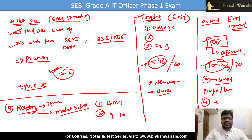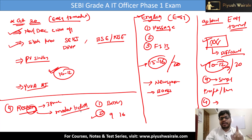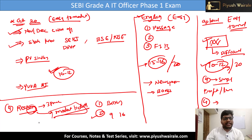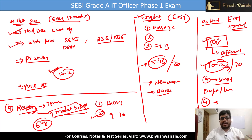That second puzzle was on the difficult side. But if you have been practicing reasoning puzzles regularly for the last two months, you can easily attempt those. For someone preparing for banking exams regularly, reasoning was on the easier side. But for people preparing specifically for SEBI, RBI, or IT officer exams, reasoning will be on the moderate to difficult side. A good attempt is six to eight questions from reasoning.